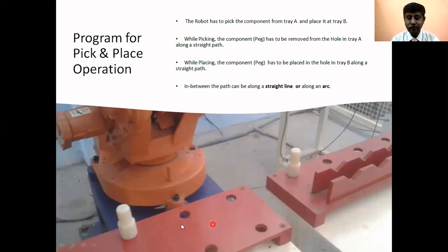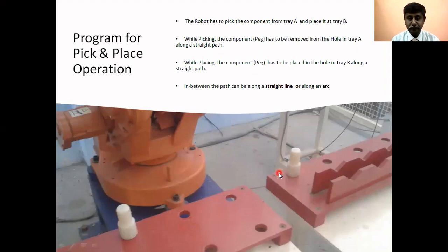It is doing that repeatedly for many five or six components. The program is done like this: the first method of programming, we move the component straight from the hole. To remove the peg from the hole it has to move straight, then to move to the next tray that is also a straight line, then it has to move straight to place the component again in tray B. So here I have all Move L commands.